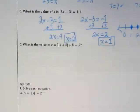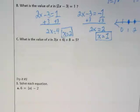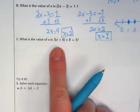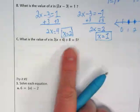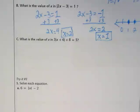Let's do C. What is the absolute value of x in 3 times the absolute value of x plus 6 plus 8 is equal to 5? We need to get that absolute value by itself. Right now it's being multiplied by 3, and it's being added to 8.